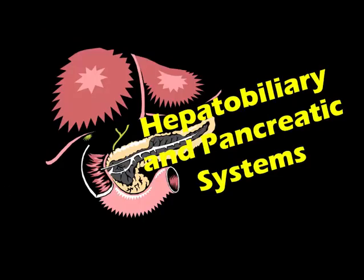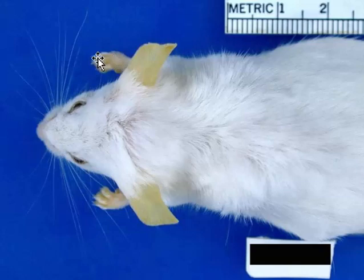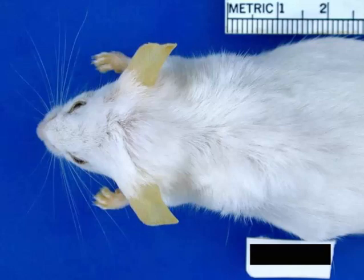Let's start with the liver and pancreas of the mouse. Here is a mouse who has icterus. You can see that the pinna and the feet are yellow, the nose is yellow. We probably have to first think about what could cause icterus — we could either be dealing with severe hepatobiliary disease or with severe hemolysis.